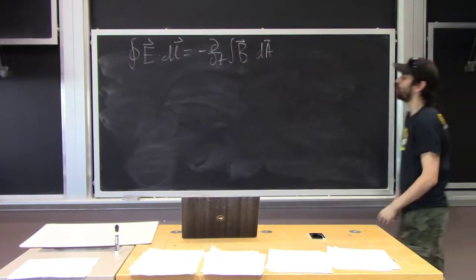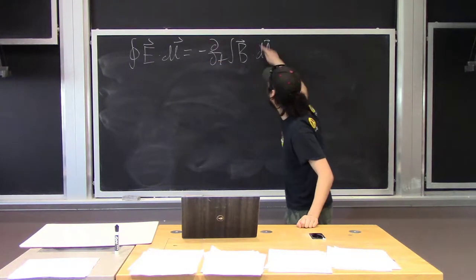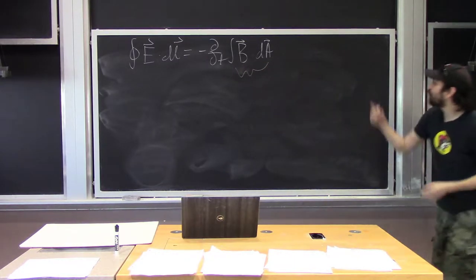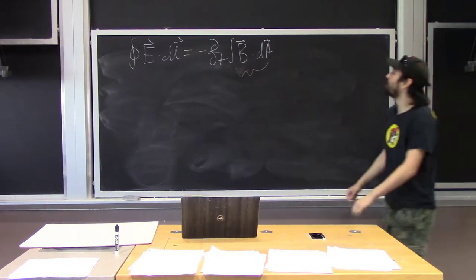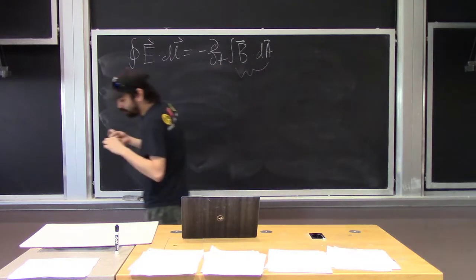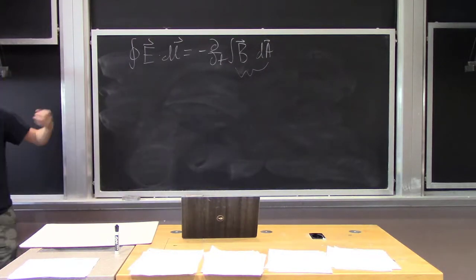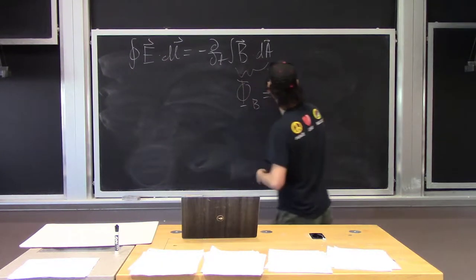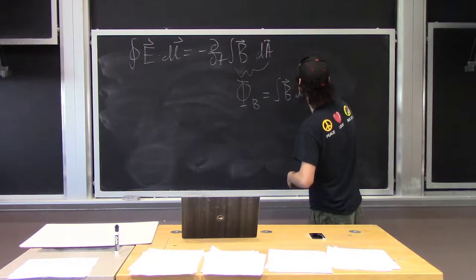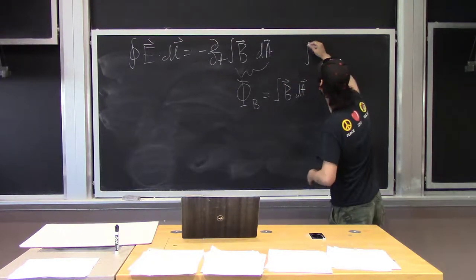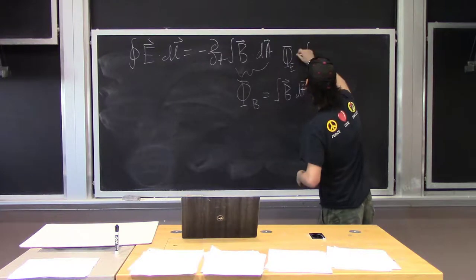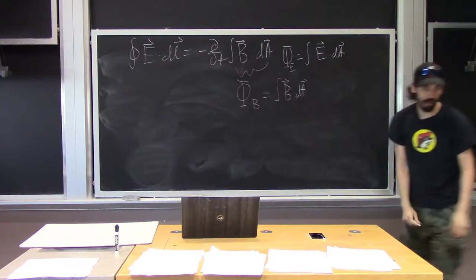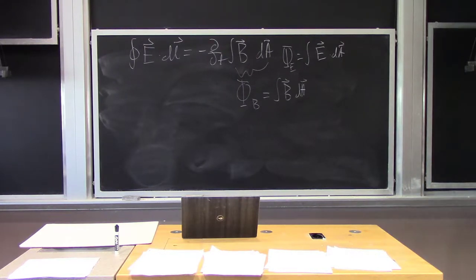The new piece is this negative time derivative of the magnetic flux. It's new, but not entirely — whenever we have some field dotted with some area element and sum over it, we call that a flux. We did the same with electric flux. Magnetic flux is really no different. Electric flux is the integral of E dot dA; now we're just saying magnetic flux is the integral of B dot dA.